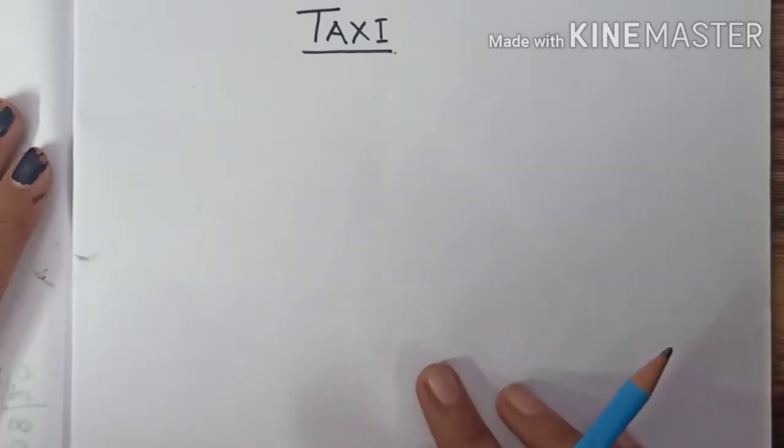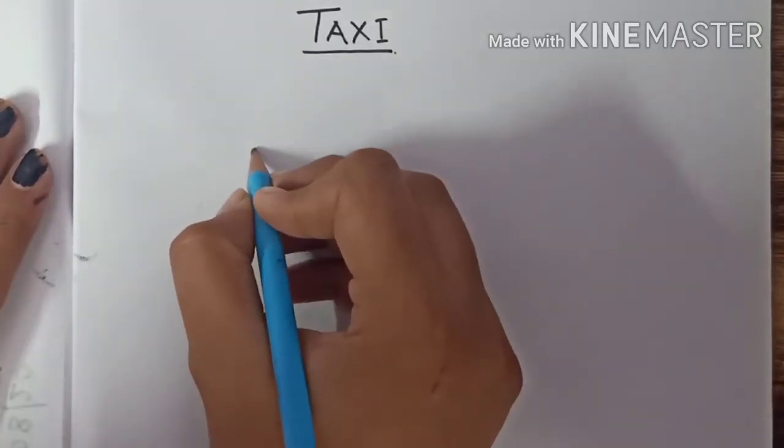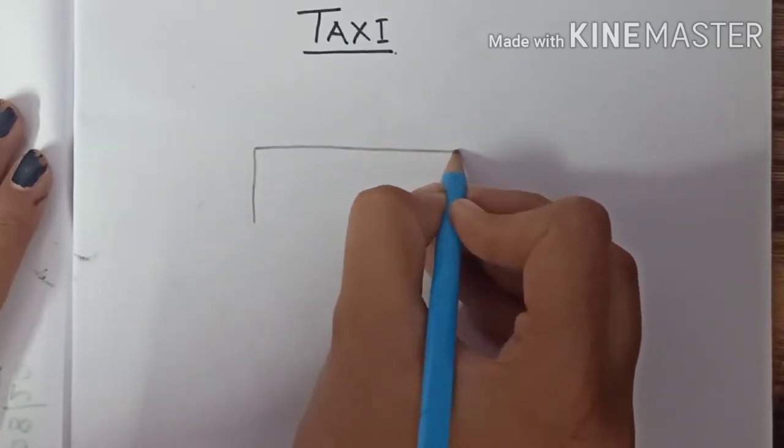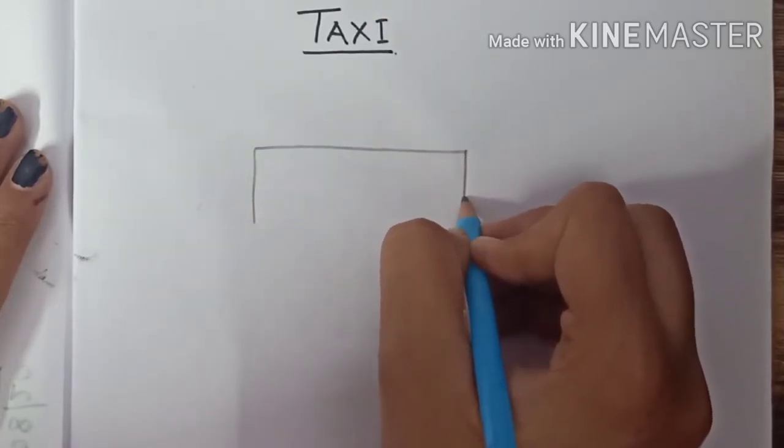Okay, we need a rectangle shape so let's draw a rectangle here, a small rectangle, not too big.